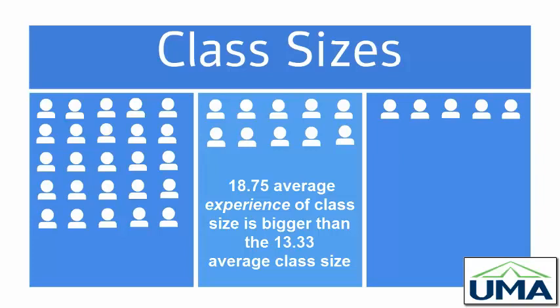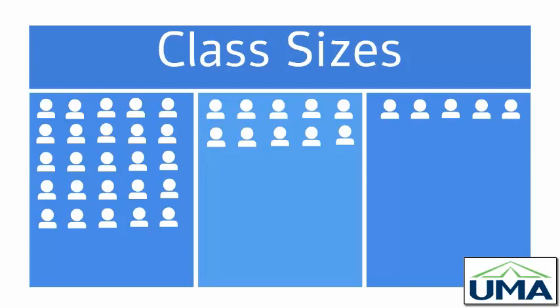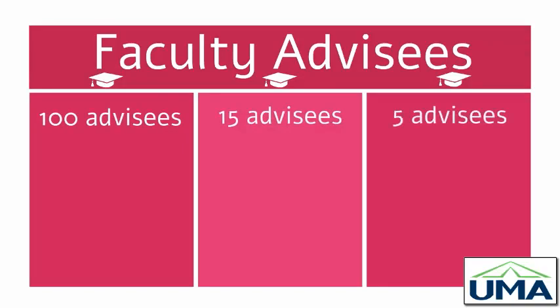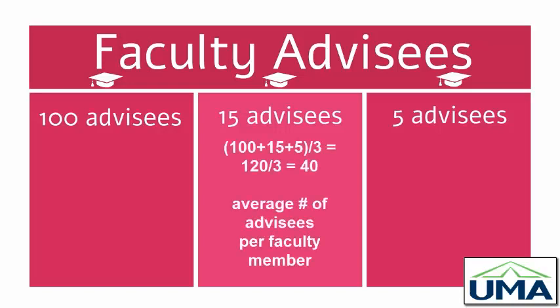That's the class size paradox in action for literal classes. But there are other kinds of classes in an educational institution like a university — for instance, trying to see your faculty advisor. Imagine just three faculty members at a university: the first has 100 advisees, the second has 15, and the third has 5. A university might advertise that the average number of advisees per faculty member is 100 plus 15 plus 5, which is 120 divided by 3 — an average of just 40 advisees per faculty member.